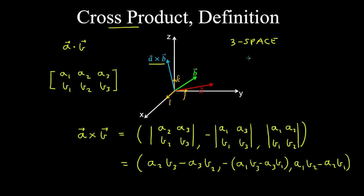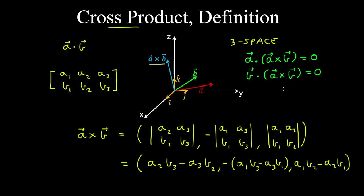The fact that vectors a and b are both perpendicular to the cross product can be shown by taking the dot product of a with (a cross b) and verifying it equals zero, and similarly taking the dot product between b and (a cross b) will also give zero. You can verify this by multiplying a1 with the first component, a2 with the second component, and a3 with the third component, and summing the result, which gives zero.